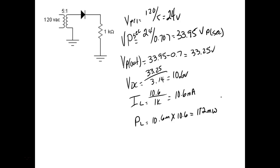I squared R, I squared times R, or V squared over R — whichever form you want to use — you can come up with the same answer.